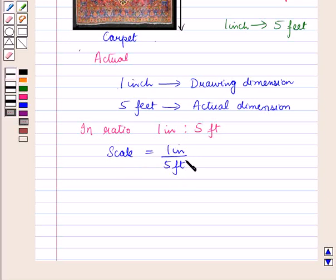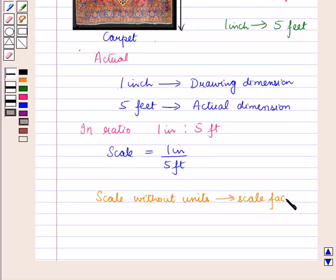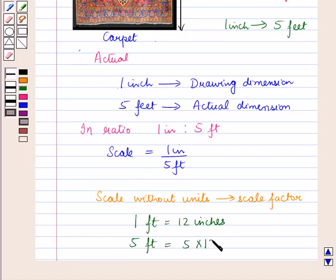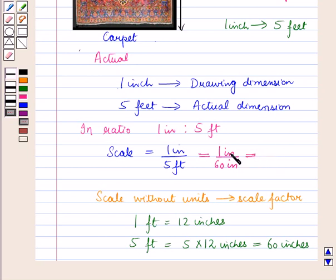A scale can be written without units when the units are the same in both the drawing and the actual object. A scale without units is called the scale factor. To write this scale without units: we know 1 foot equals 12 inches, so 5 feet equals 5 × 12 = 60 inches. This gives us 1 inch upon 60 inches, which simplifies to 1 upon 60, or written as 1 is to 60.